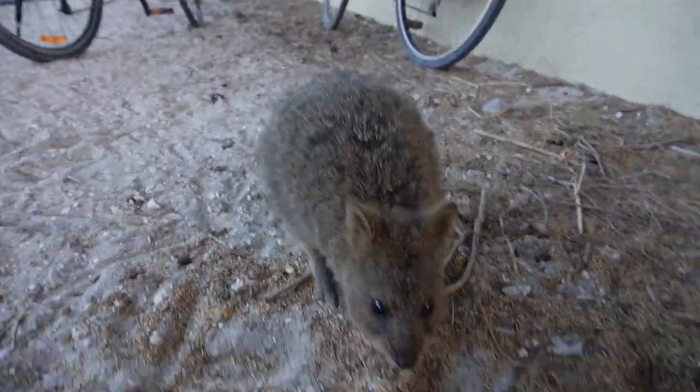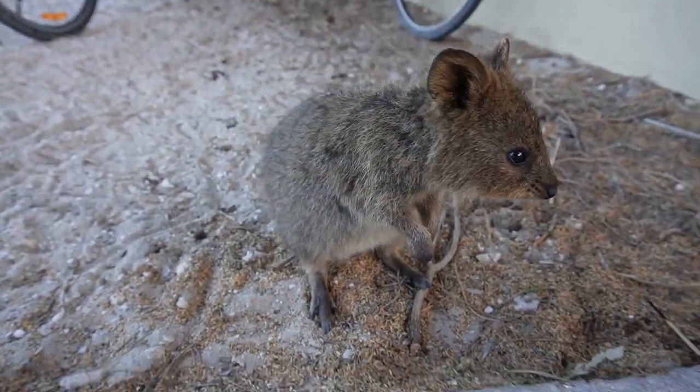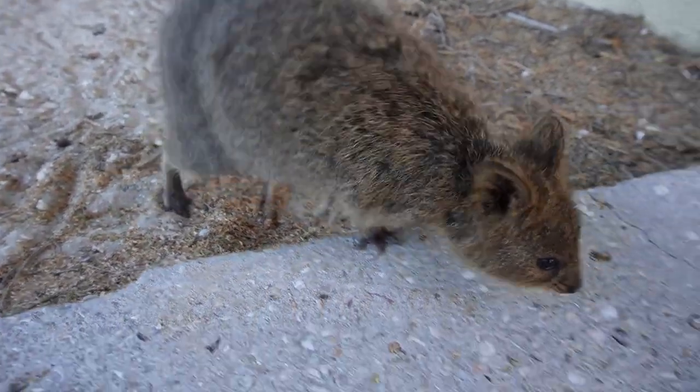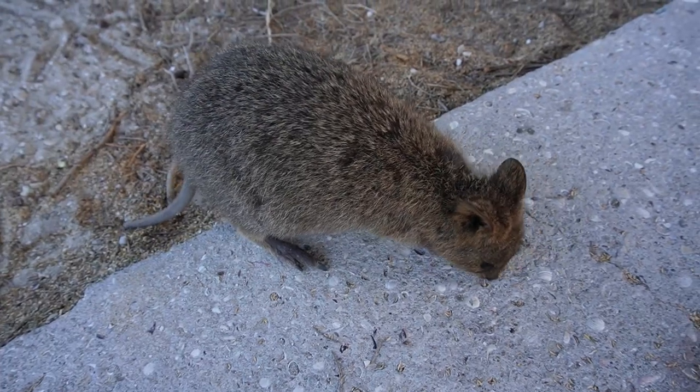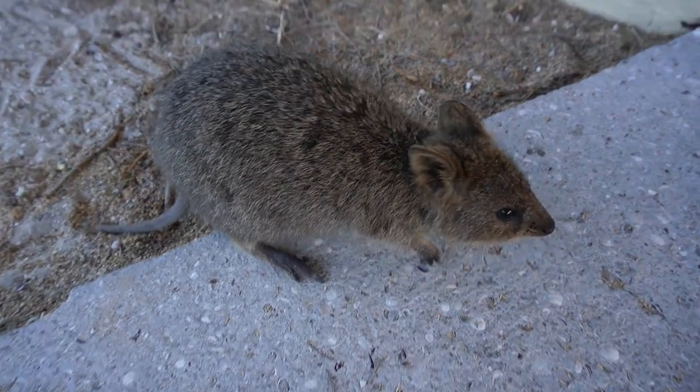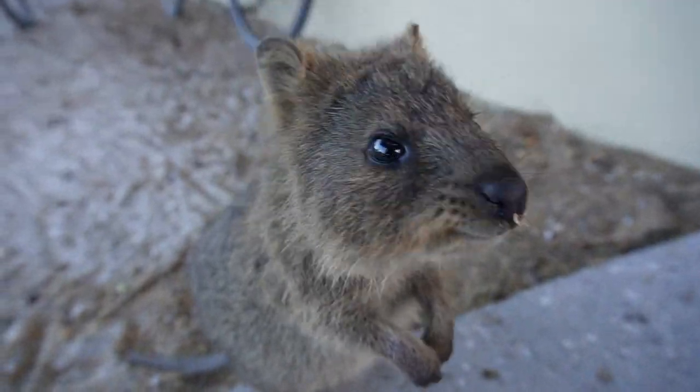In 1696, Dutch explorer Willem de Vlaming actually named this place T'Eiland at Rottnest, meaning the island of the rat nest, because he mistook these cute critters to be giant rats.